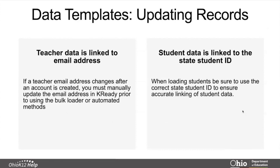There are a couple of things that you need to know specific to updating records. There may be name changes for teachers or email addresses that get updated. If that is the case, do a manual change in the system for that teacher prior to doing a bulk load or automated load in the system. Otherwise, if you do a bulk load of the teacher's new name, it's going to create a brand new account for that user. Also, with the state IDs for students, when loading those IDs, you want to make sure you use the correct ID. If the student doesn't have an ID, we have information on our site that can walk you through the process of generating that ID so they can be loaded in the system.